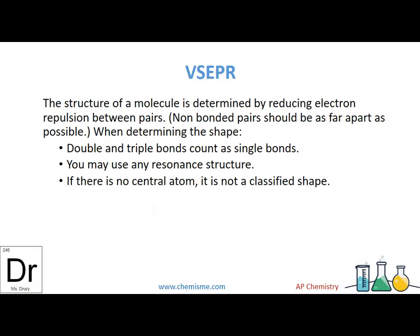So with the VSEPR theory, it means valence shell electron pair repulsion. It's basically saying that the structure of the molecule is determined by reducing electron repulsion between pairs, making them as far apart as possible so that the pairs don't repel each other.